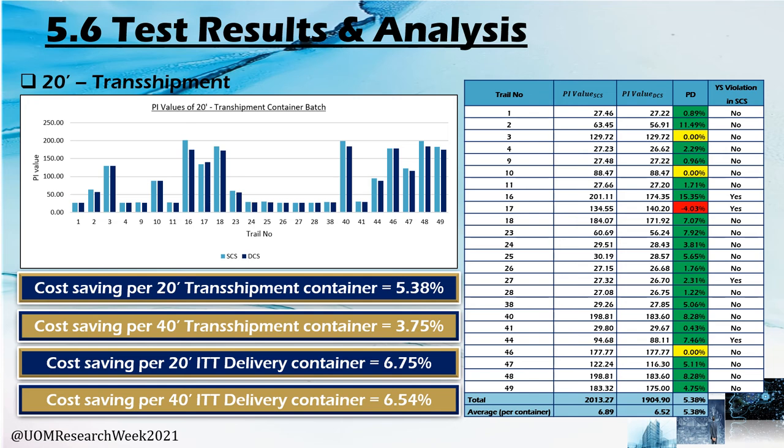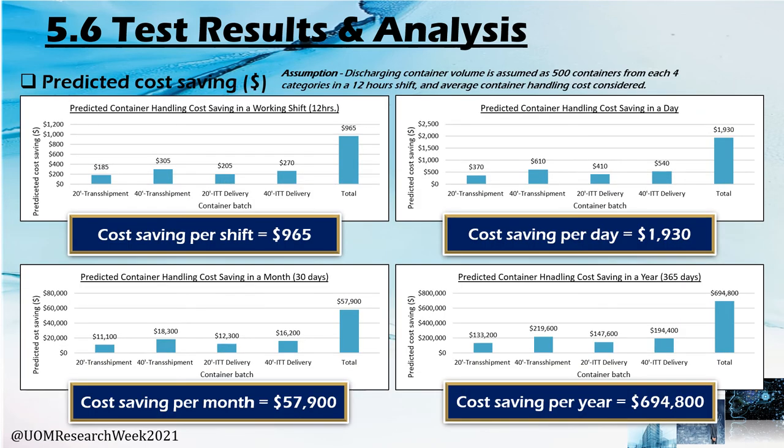The results revealed that 5.38% cost can be reduced per 20-foot transshipment container using the developed model. Likewise, similar cost reductions can be gained per container across other categories using the dynamic container stacking model. Further, we predicted the cost savings that can be gained for a container terminal per shift, per day, per month, and per year.